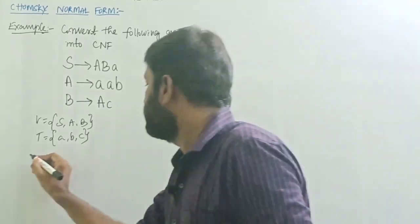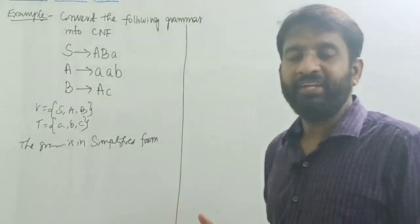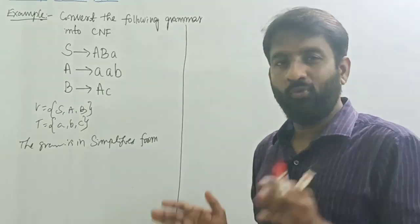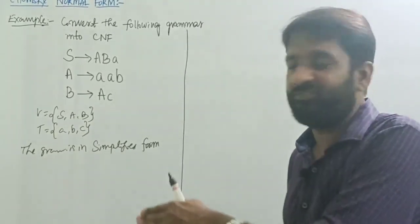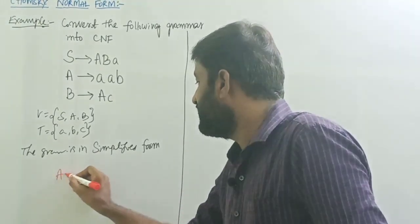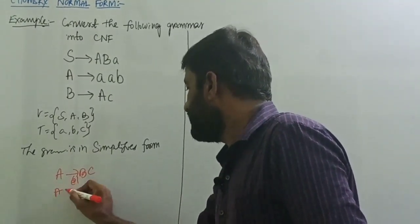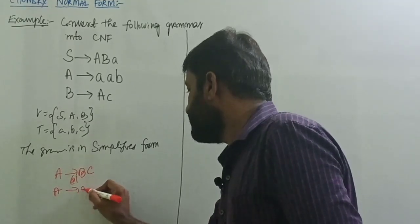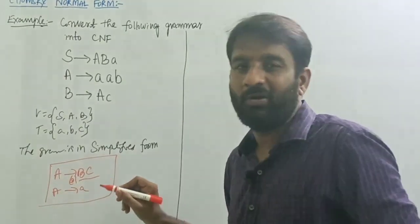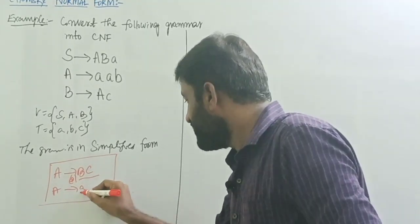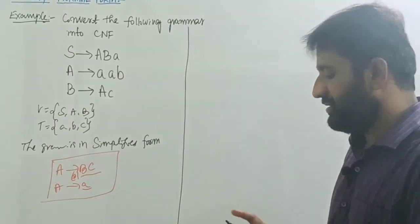The given grammar is already in simplified form. Now identify which productions are already in Chomsky Normal Form. The form of CNF is: A tends to BC, or A tends to a only. The right-hand side should have exactly two non-terminals or a single terminal.